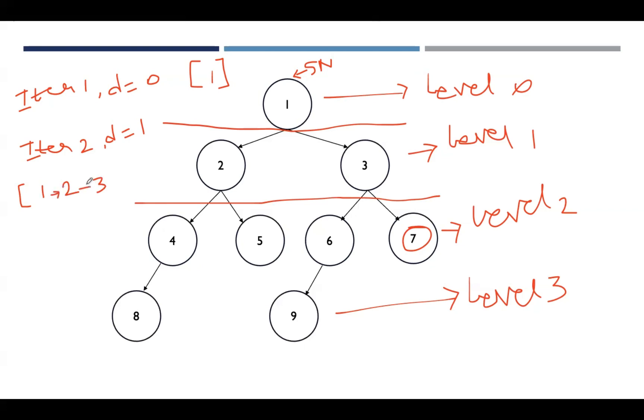Check whether the goal node is reached. No, right? So again increment depth by 1. In iteration 3, increment depth by 1, 1 plus 1, that is 2.